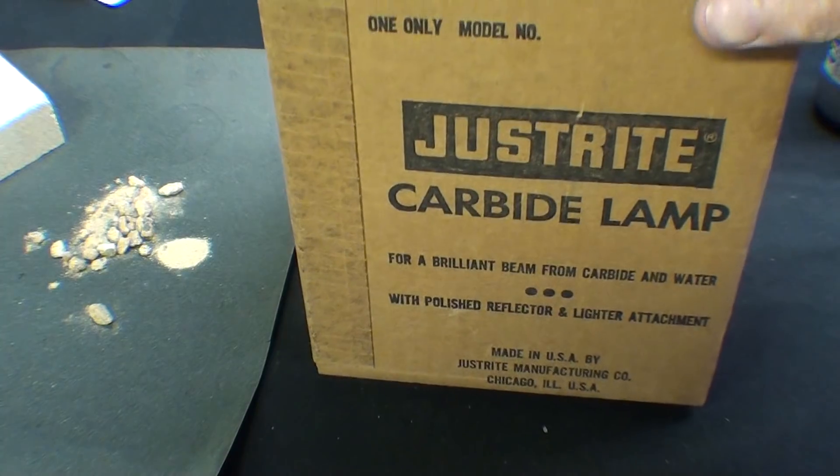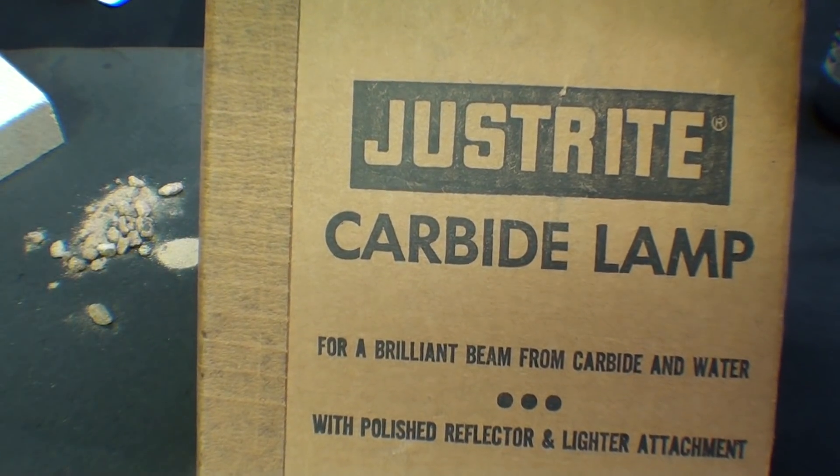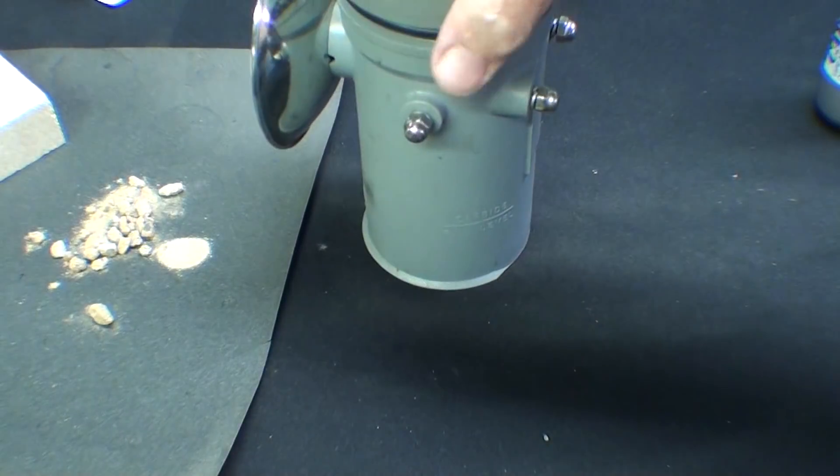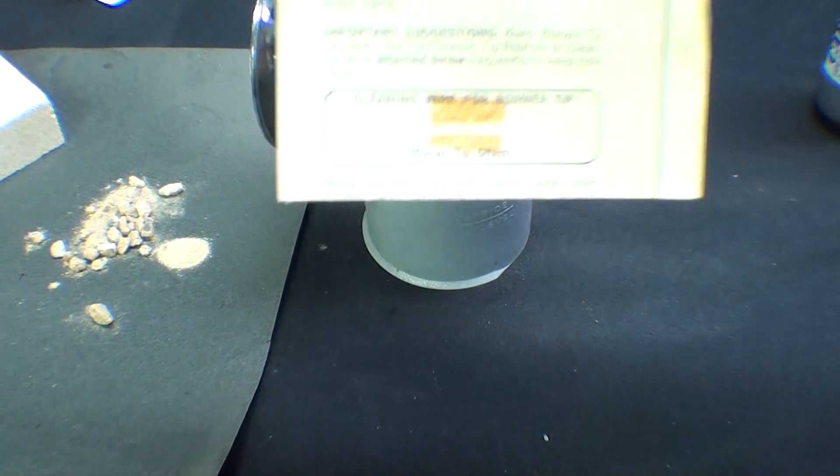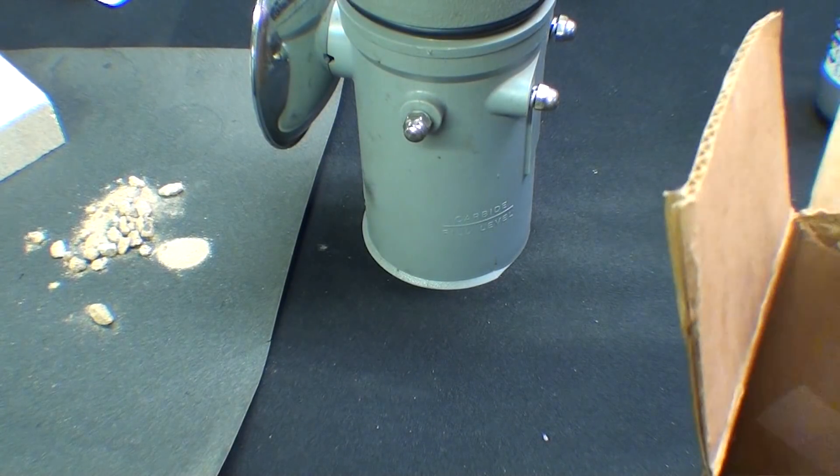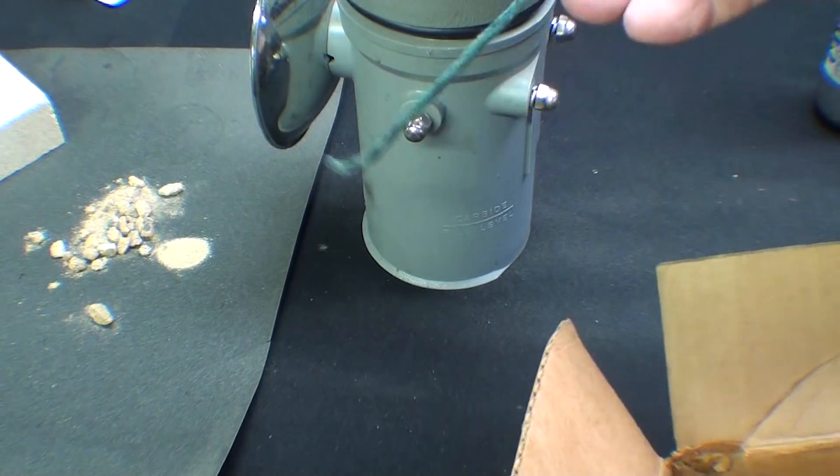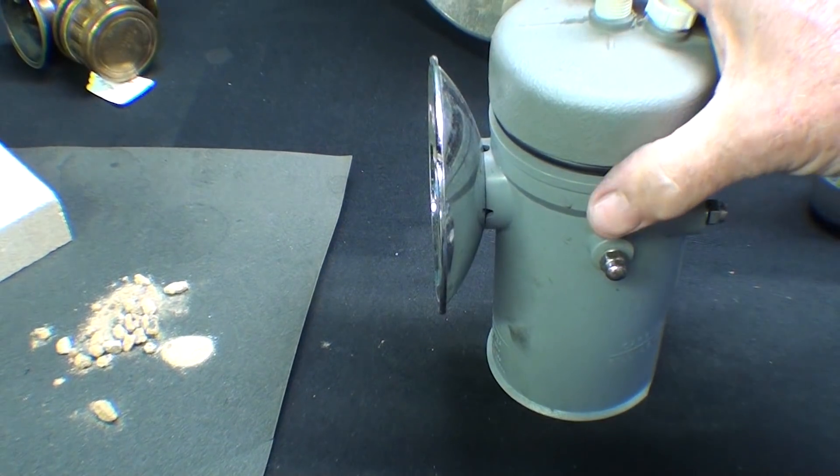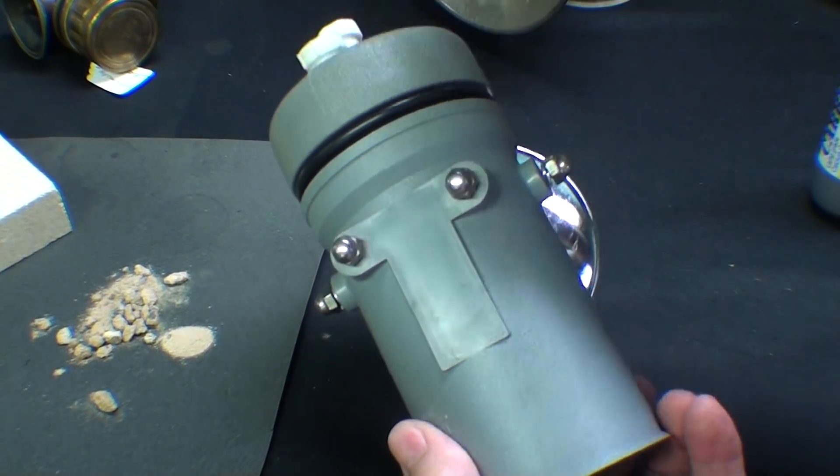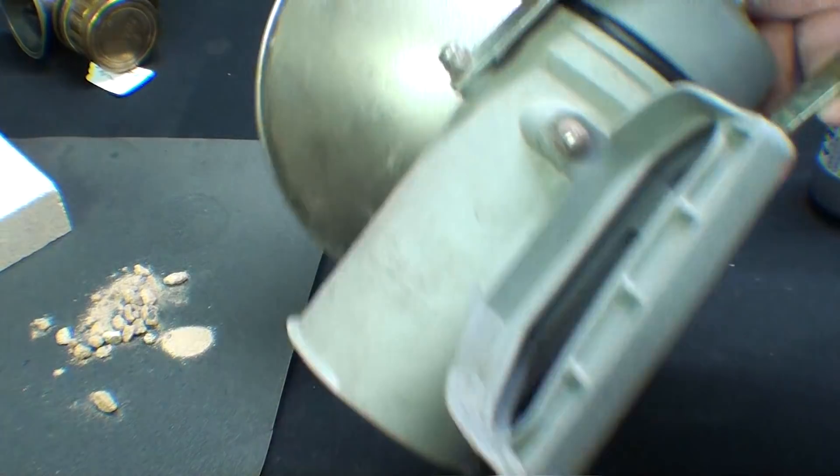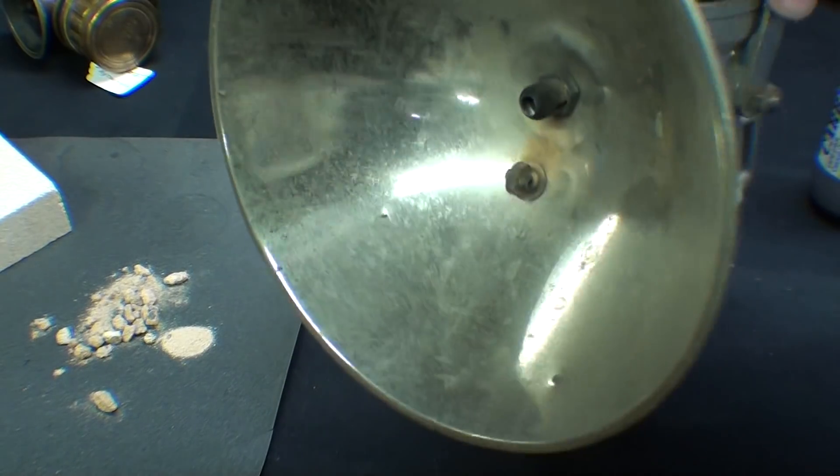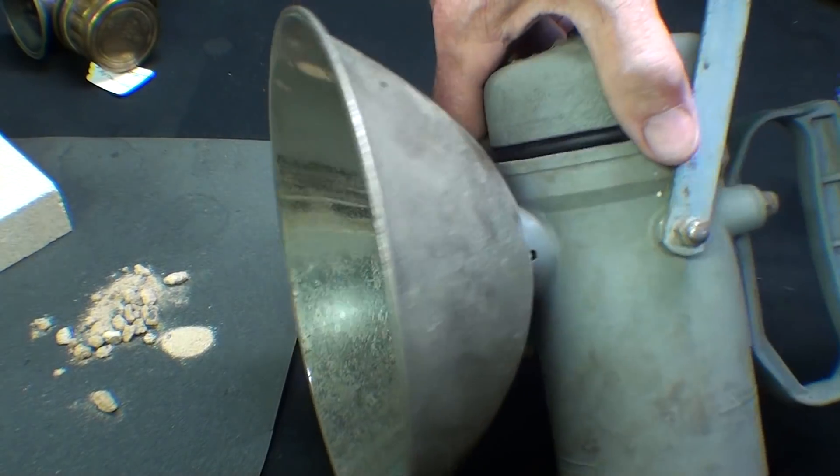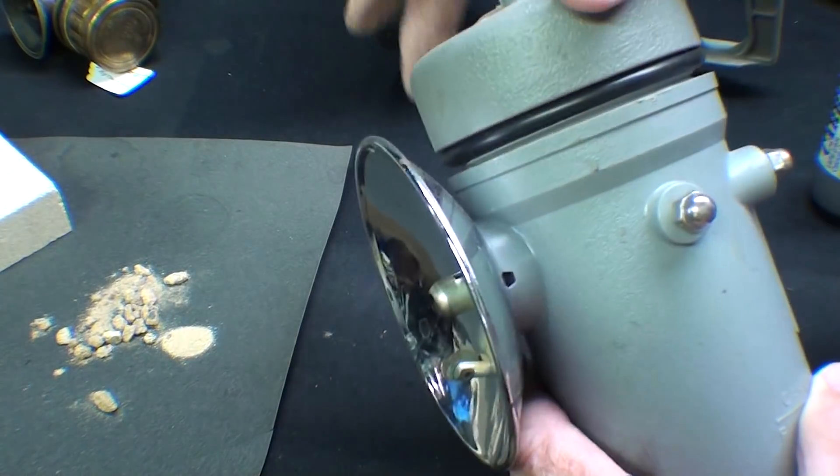As you know, I always have more than one of everything. Here's a more modern carbide lamp. It says for a brilliant beam from carbide and water with polished reflector. This one is much more modern, along with directions. This one is almost new. It's got two bolt studs to hold a handle on, and the handle did not come with that. It came from an auction. This bigger one works fine, but notice the corrosion on the reflector, so it just didn't put out a very good beam.